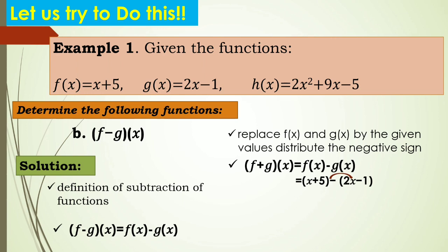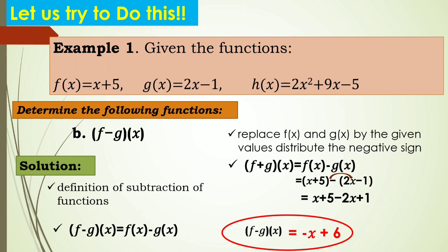Distributing the negative sign: negative times positive 2x gives negative 2x, and negative times negative 1 gives positive 1. So we have x plus 5 minus 2x plus 1. Then combine like terms: x minus 2x equals negative x, and 5 plus 1 equals 6. Therefore, f minus g of x equals negative x plus 6.